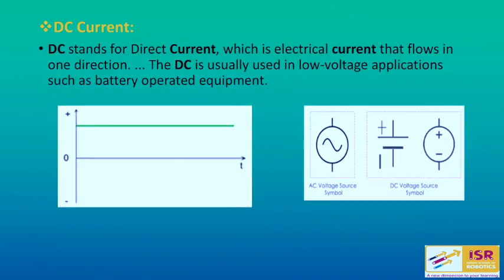The second type is DC current. DC stands for direct current, which is electrical current that flows only in one direction, not in two directions as in the case of alternating current. DC current is usually used in applications where very low voltage is required, such as watches, clocks, and appliances that can be operated on battery. Battery is the device through which we can get DC current.